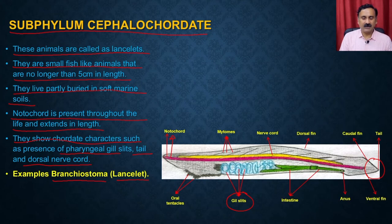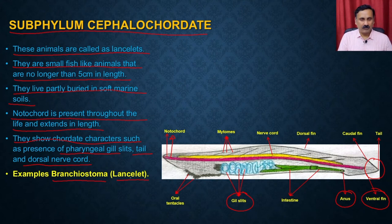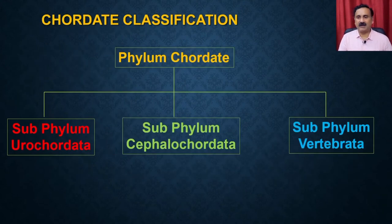The structure of Branchiostoma includes different parts: a well-developed anus, ventral fins, intestine, dorsal fins, and the nerve cord which is dorsal in position.